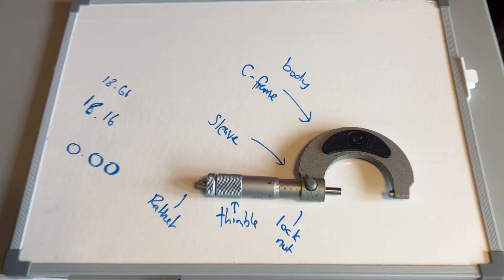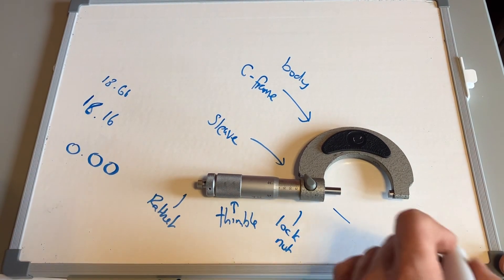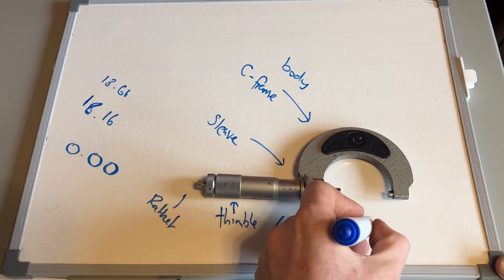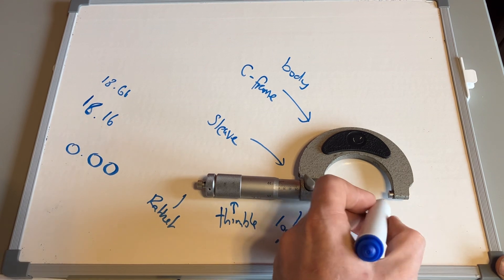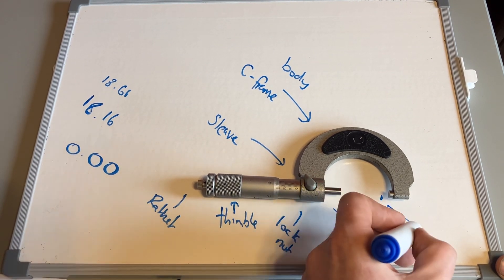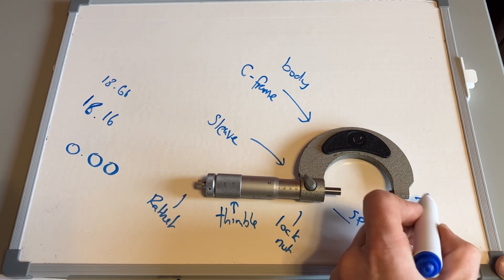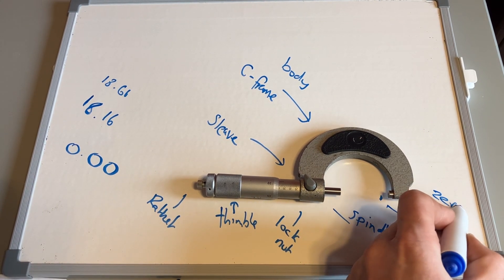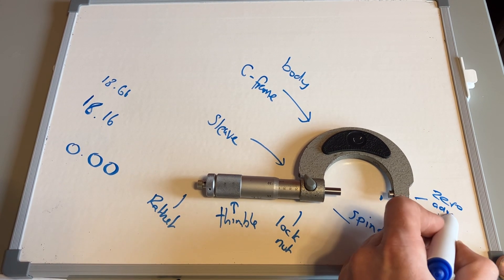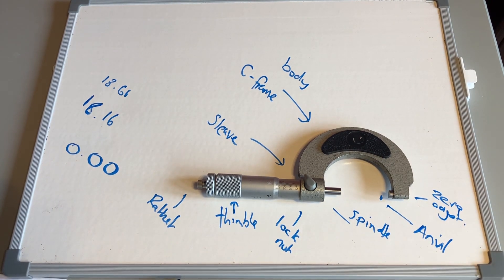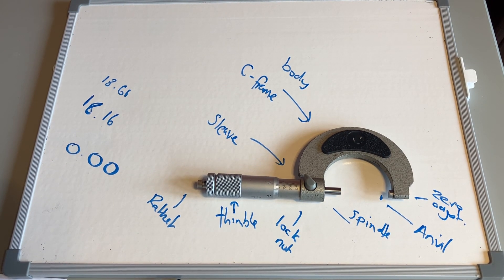And then the most important two bits, we've got the spindle, and the other section here that clamps against is the anvil. And sometimes you may get a zero adjuster on the end here, it doesn't on this particular one, should it ever go out of scale.